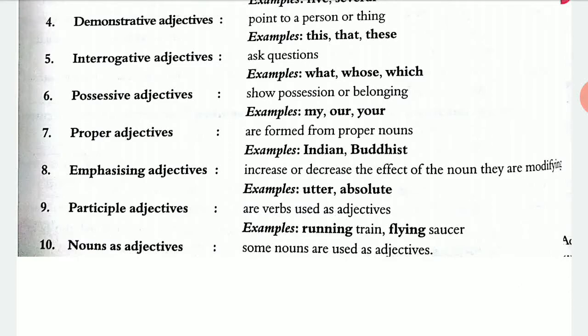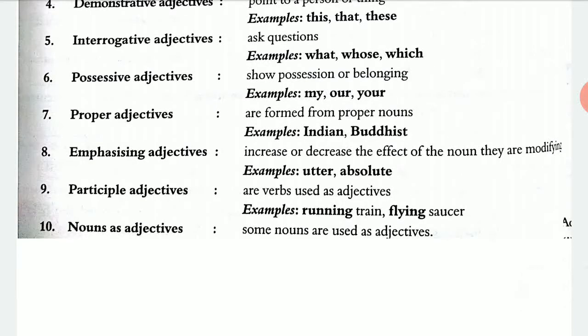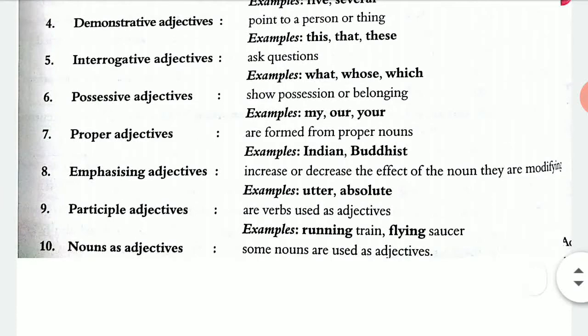Number nine is participle adjectives — verbs used as adjectives. For example, 'running train' — the train was running; 'flying saucer' — here 'running' and 'flying' are -ing verbs that define the nouns. Number ten, and the last kind, is nouns as adjectives. Some nouns are also used as adjectives. For example, 'diamond ring' — a ring that is of diamond; 'stone wall' — a wall made of stone.